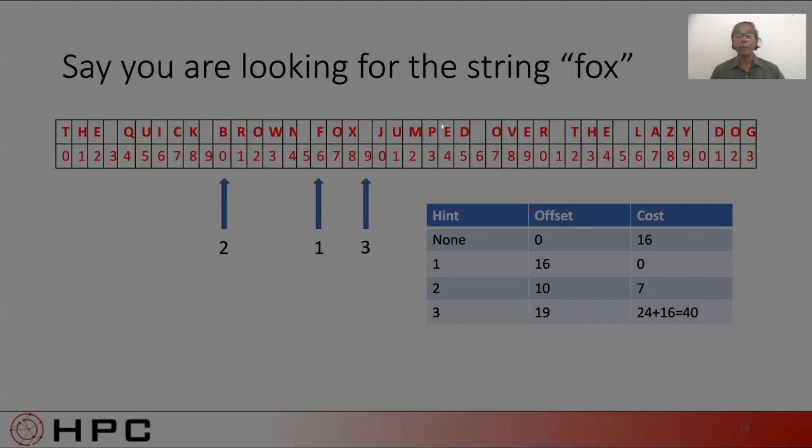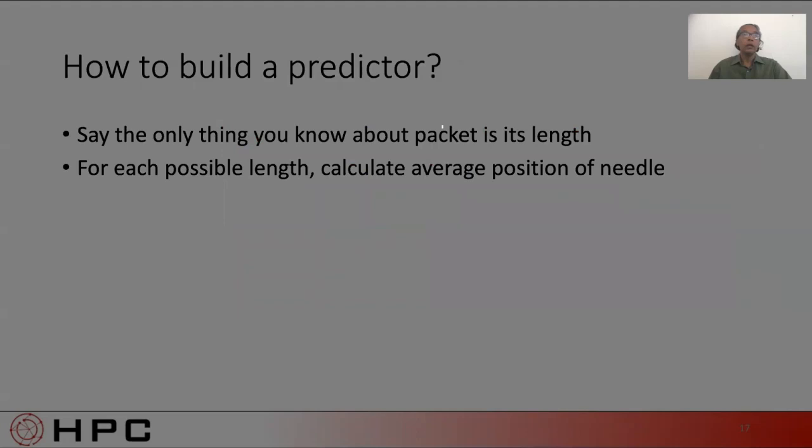If you listen to expert two, we would start at position 10. Well, not exactly where we'd like to be, but definitely better than starting from zero. Three is an interesting case because here, actually, we get hammered. We are told to start looking from position 19, which means we would scan to the end of the string, find nothing there. Then we'd start at position zero again, and then we would find fox.